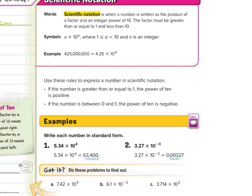Use these rules to express a number in scientific notation. If the number is greater than or equal to 1, the power of 10 is positive. If the number is between 0 and 1, the power of 10 is negative.